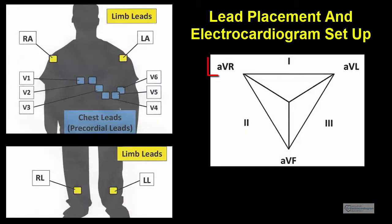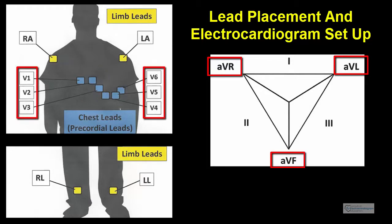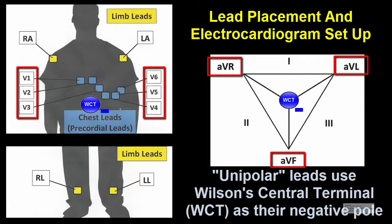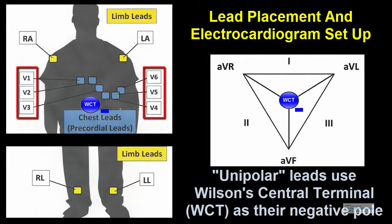The remaining leads AVR, AVL, AVF, and leads V1 through V6 are called unipolar leads, and all use Wilson's central terminal as the negative pole. With leads V1 through V6, the positive lead is each respective electrode.